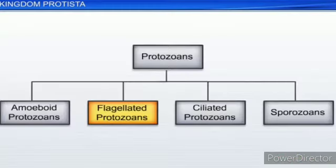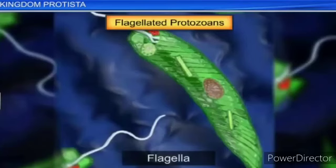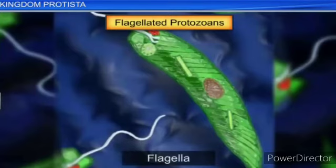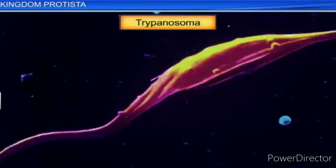The second group of protozoans is flagellated protozoans. Members of this group are free-living or parasitic and have flagella as their locomotory structure. The parasitic forms cause diseases such as sleeping sickness. Example: Trypanosoma, causing the disease sleeping sickness.